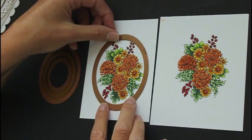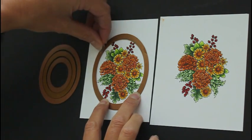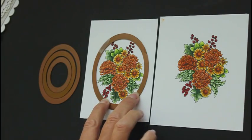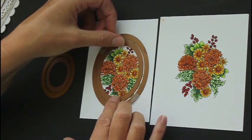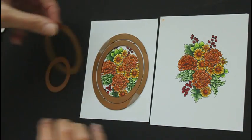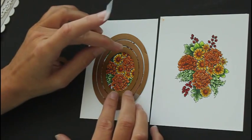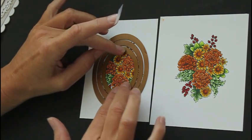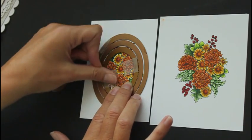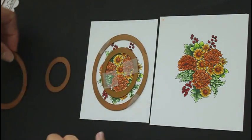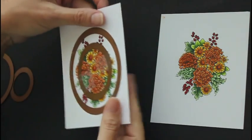You start with placing your largest die over your image and adhering it in place with dimensional adhesive. Place the second die inside, and then the third, and adhere the third one in place again. The second one is just as a guide, so you space them at the same distance. Then you take the second die out and cut these layers with your die cutting machine. Then you take the layers apart.